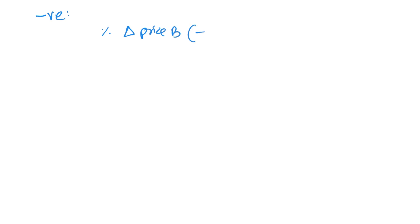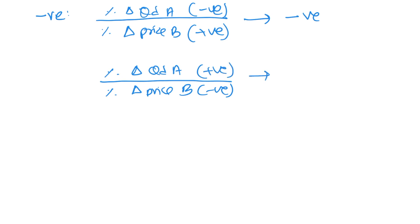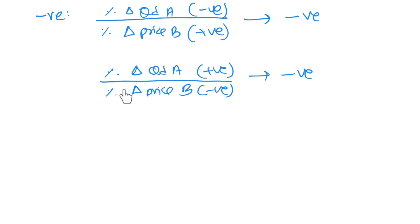Now let's move on to negative values. If the percentage change in price of B is positive, it causes the percentage change in quantity demanded of A to be negative, giving a negative value. Alternatively, if the percentage change in price of B is negative, this causes the percentage change in quantity demanded of A to go up — again giving a negative sign. Logically, if the price of one product goes up and causes the demand for another product to fall, this suggests the two products are complements, because they are jointly demanded.